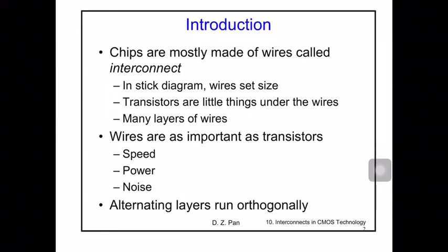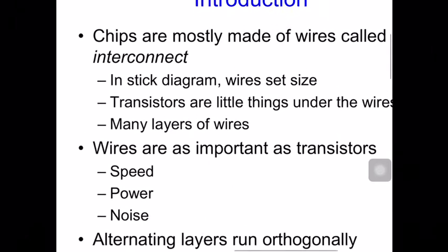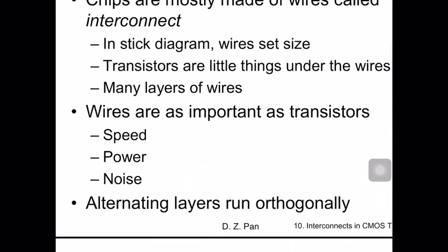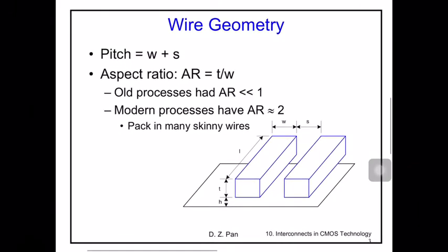As an introduction, chips are usually made of wires called interconnect. In a stick diagram, the wires have a set size and transistors are little things placed under the wires. There are many layers of wires - some CMOS technologies have 10 to 14 levels. Wires are as important as transistors and they affect the speed, power and noise of the chip. Alternating layers run orthogonally.